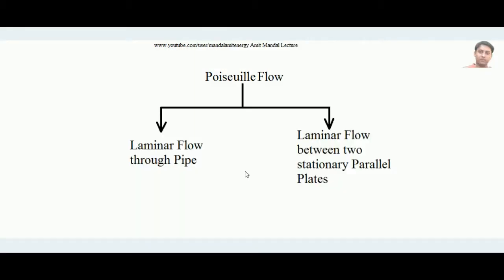In this lecture we will learn about Poiseuille flow and its basic attributes. Poiseuille flow is a kind of flow in which we study laminar flow — either laminar flow occurring through a cylindrical pipe, or laminar flow occurring between two stationary parallel plates. Both cases come under the category of Poiseuille flow.